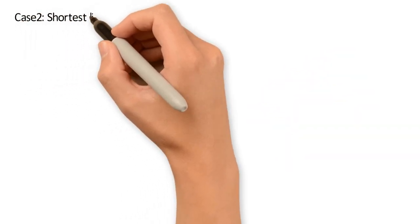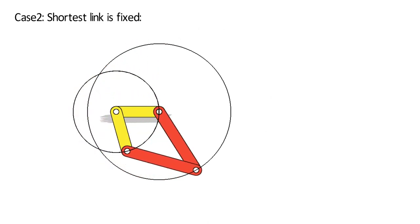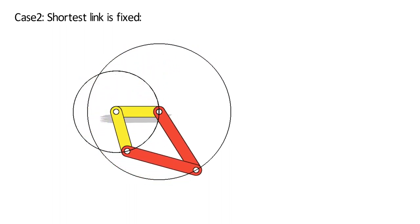Case 2: Shortest link is fixed. The mechanism so obtained is a double crank mechanism. In this mechanism, one revolution of the longer link causes two revolutions of the other shorter link.